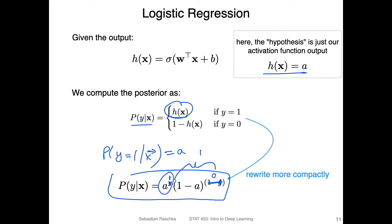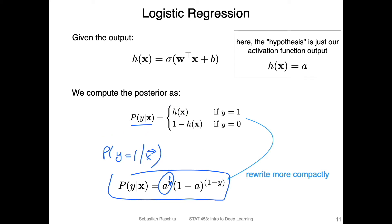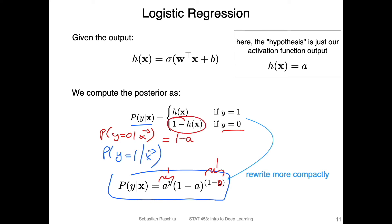Now consider the case where y equals zero. Then the first term's exponent is zero, so that term becomes one. What remains is one minus a, which corresponds to the second case of the piecewise function. This confirms that the compact equation summarizes the piecewise function.